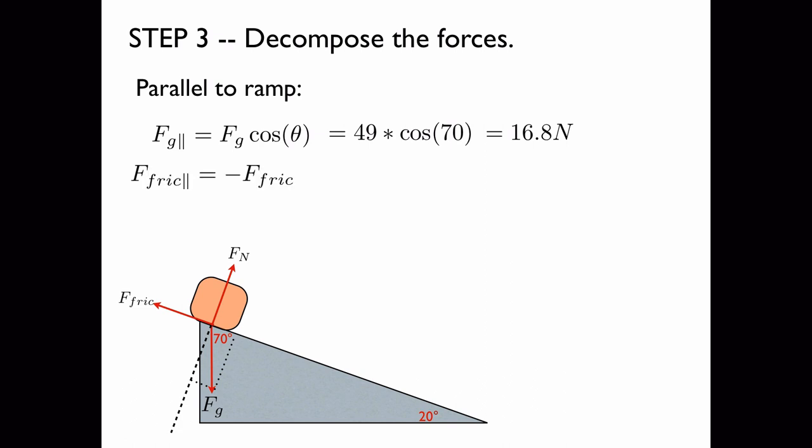Now the frictional force is already parallel to the ramp, except we need to add a negative sign to take into account the fact that the frictional force is opposing the block's motion down the ramp. And because we've decided that the positive direction is down the ramp, the negative direction is up the ramp, we have to add a negative sign. Which gives us negative 27.6 newtons. This allows us to calculate the net force parallel to the ramp. We add them and we get negative 10.8 newtons.